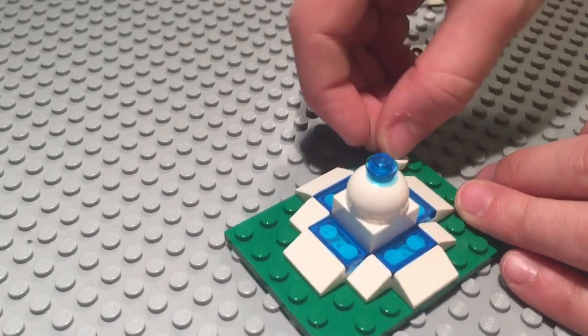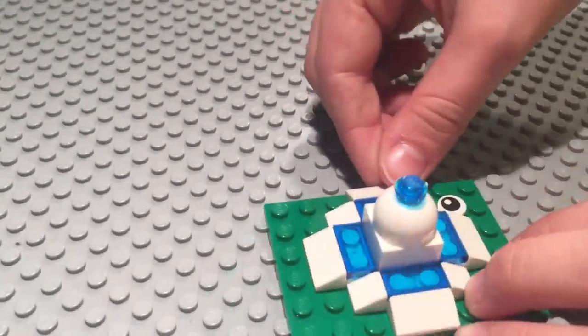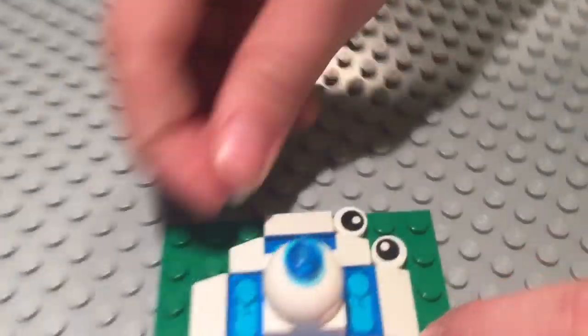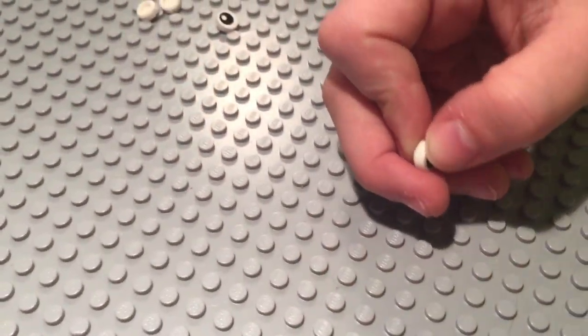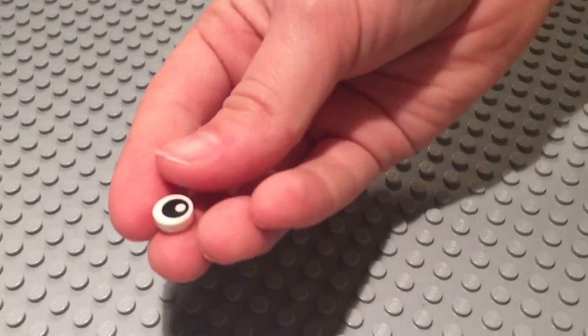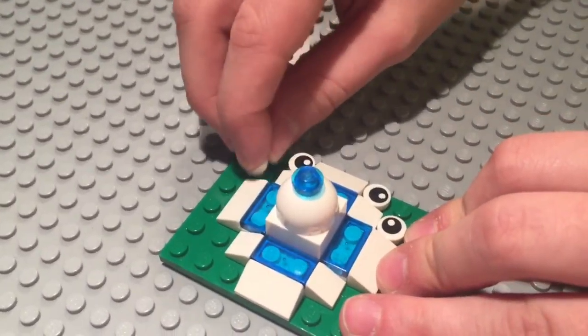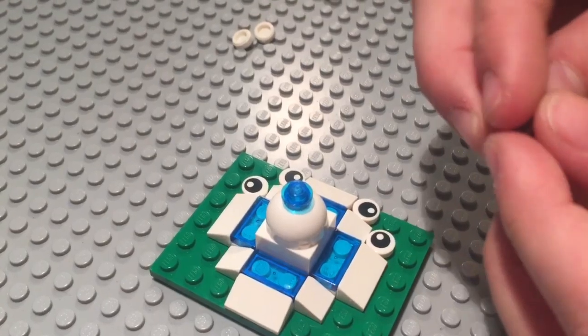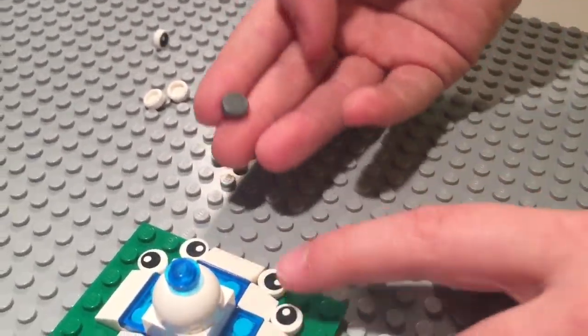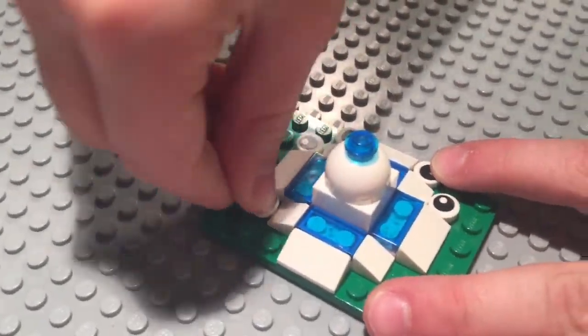And then to add a cool effect, all around here add these little 1 by 1 flat tile pieces that are so cool—see, like these that have eyes on them—and then add those all around. And if you want, also, instead of these you could use these, but I like the eye better because it looks cool.